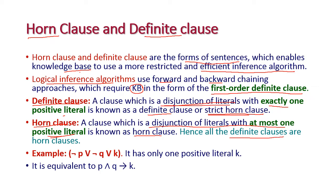Let us see one example. In this example, we have a negative literal and a positive literal K, connected by the disjunction symbol. This clause is called a disjunction clause because we are using only the disjunction symbol and we have only one positive literal. Hence, this is called a horn clause and definite clause.